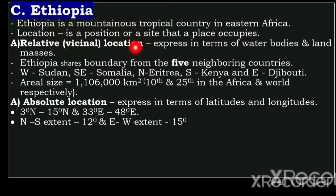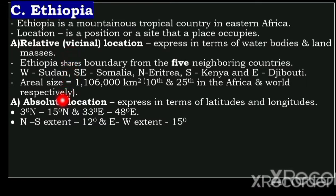Location is a position or a site of a place. The location of Ethiopia is expressed in terms of relative and absolute. Relative or vicinal location is expressed in terms of other bodies and land masses.